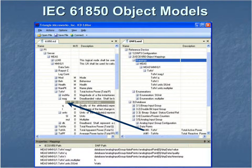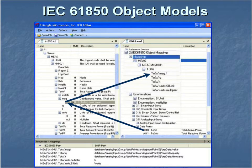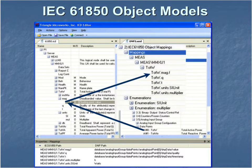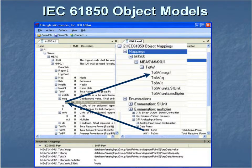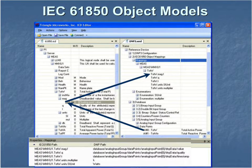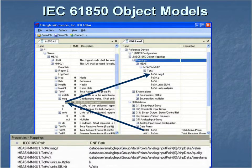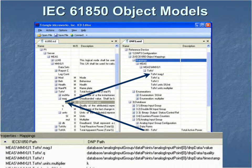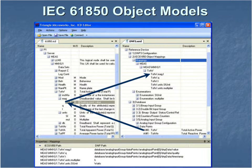Once it is mapped, it appears in section 2 of the device profile document, and the ICD file is no longer necessary. The properties window shows the mappings. Note how a 61850 data attribute can be mapped to the timestamp, quality, or value on a DNP3 point.